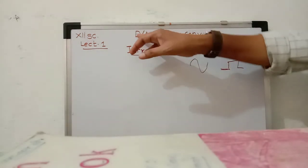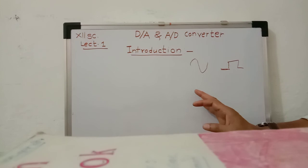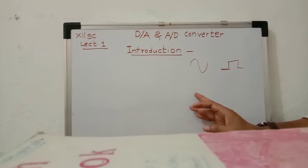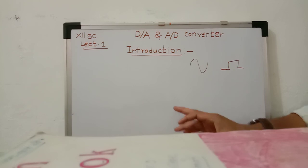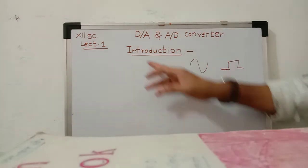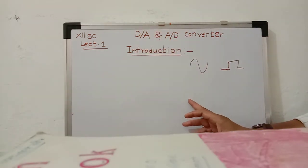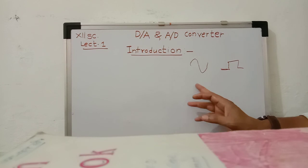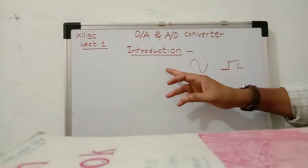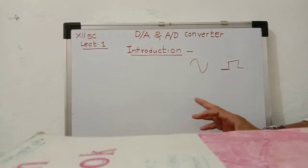In this topic, we will discuss different types of Digital to Analog Converters and Analog to Digital Converters. There are many types of Digital to Analog Converters: one is the Weighted Resistor type Digital to Analog Converter, and second is the R-2R Ladder type Digital to Analog Converter. We will stop here, and in the next lecture we will study the Weighted Resistor type Digital to Analog Converter.